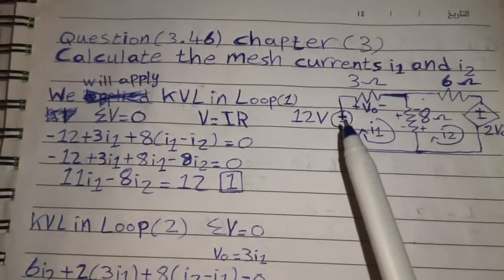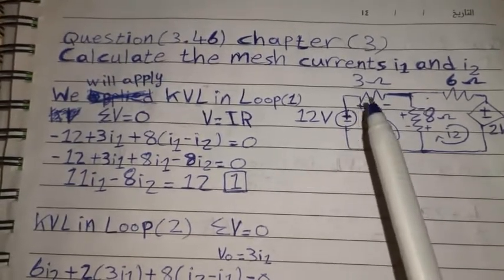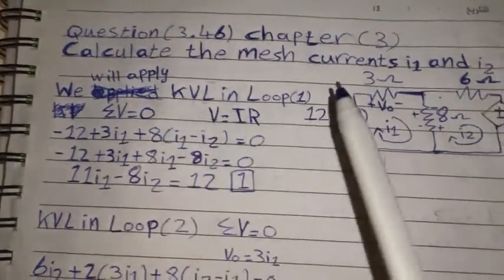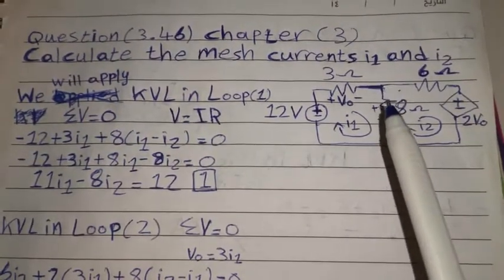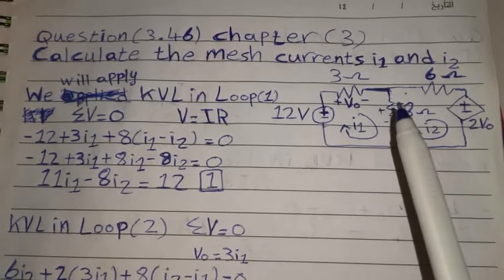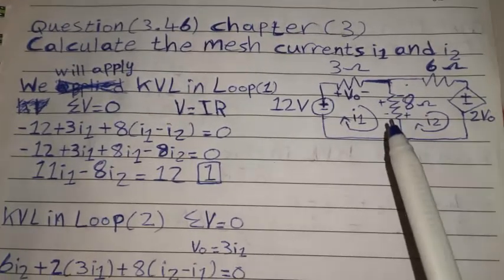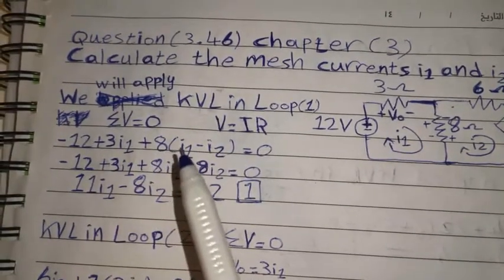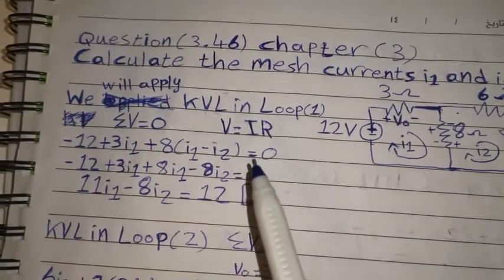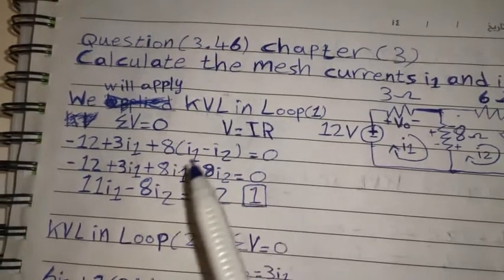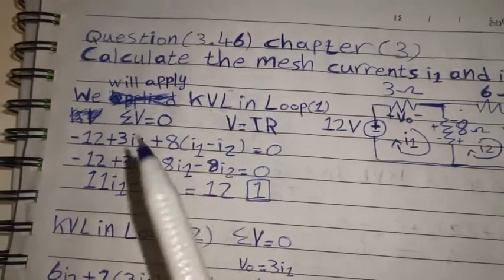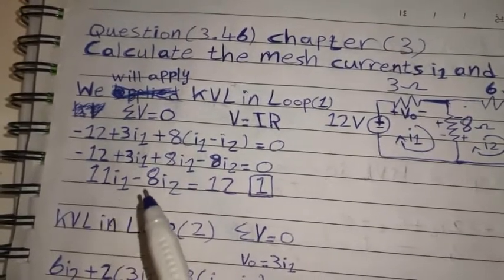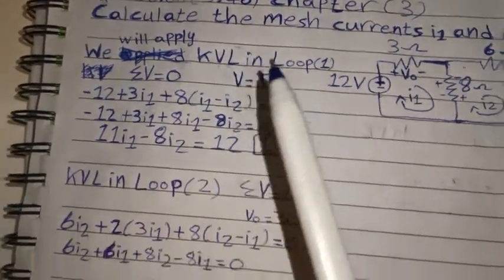Then the current will go from positive to negative in this resistor, so we say plus 3I1. Then I1 will go from positive to negative in this resistor, and I2 will go from negative to positive in this resistor, so we say 8 multiplied with (I1 minus I2) equals zero. After simplification, the first equation will be: 11I1 minus I2 equals 11.